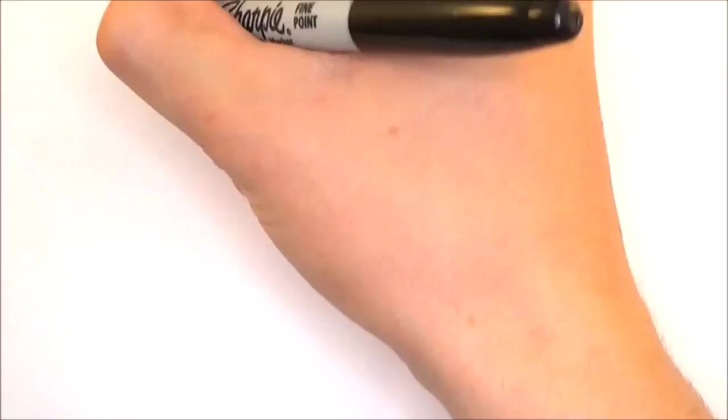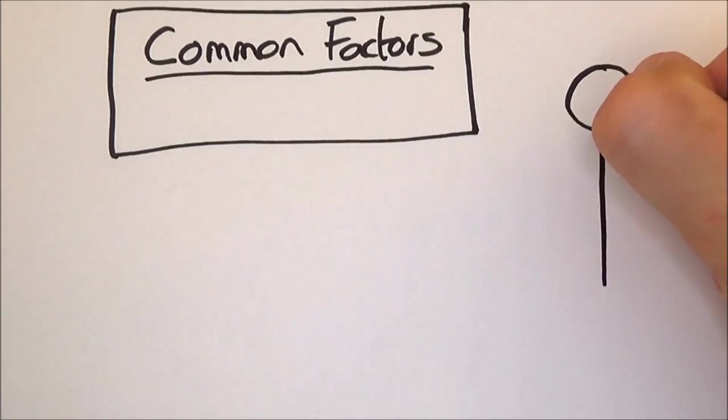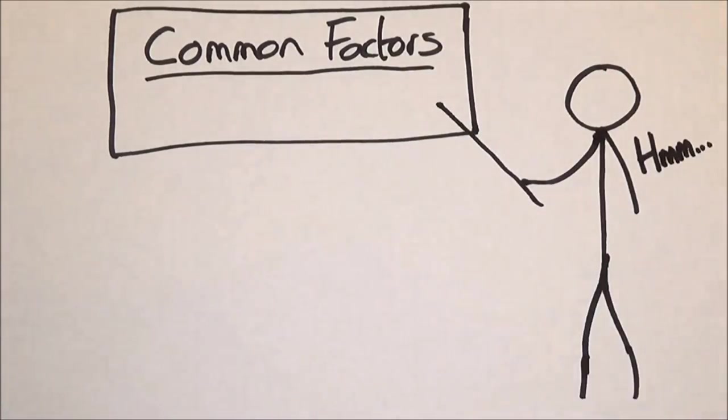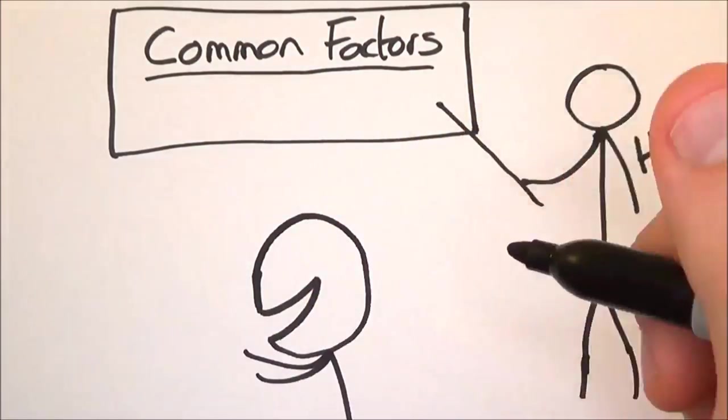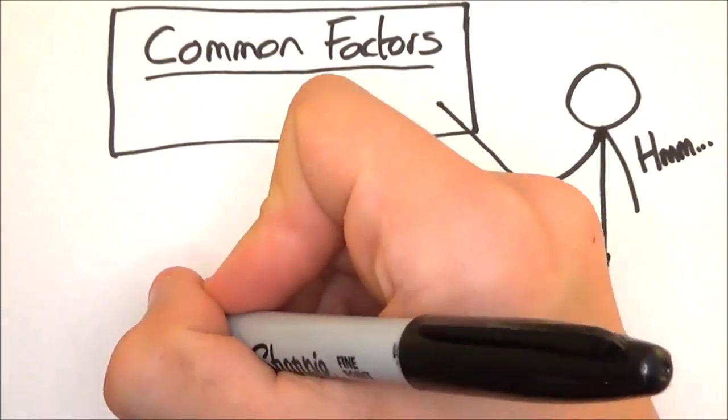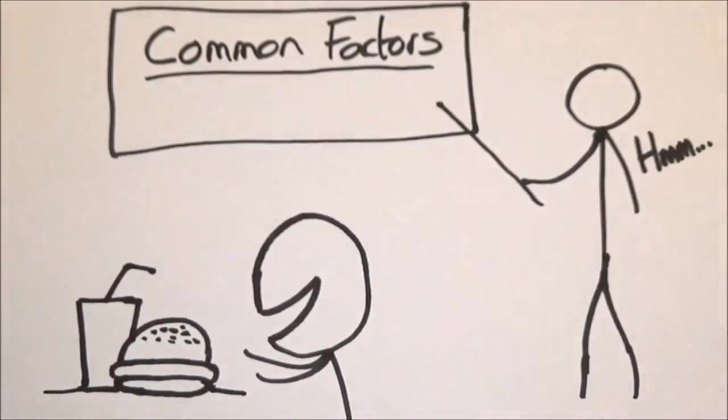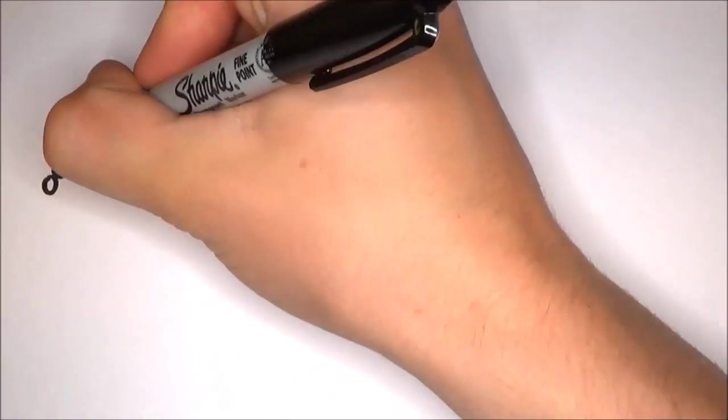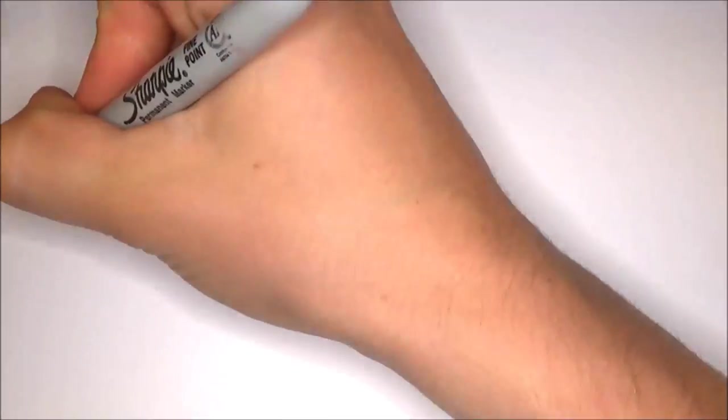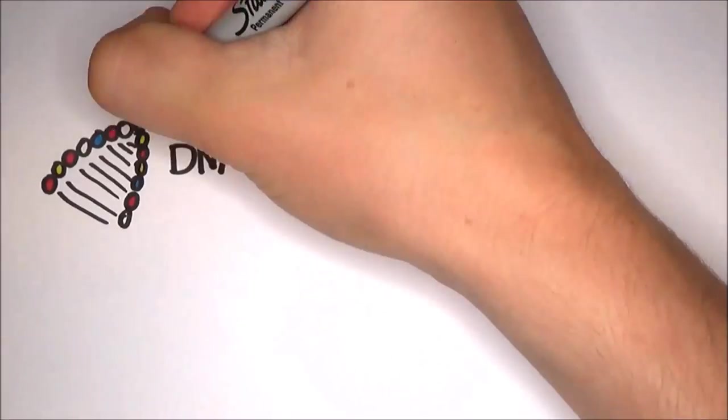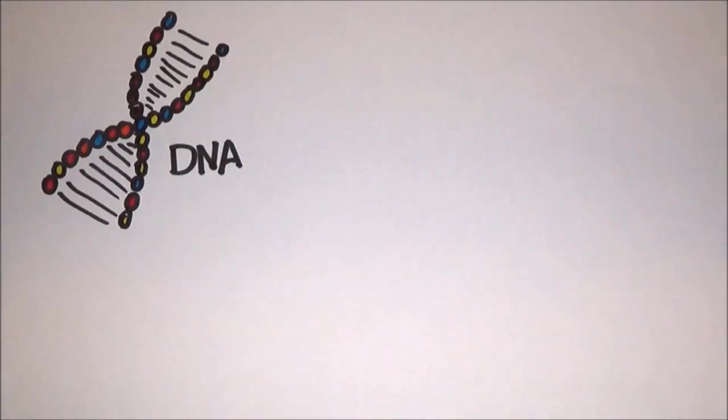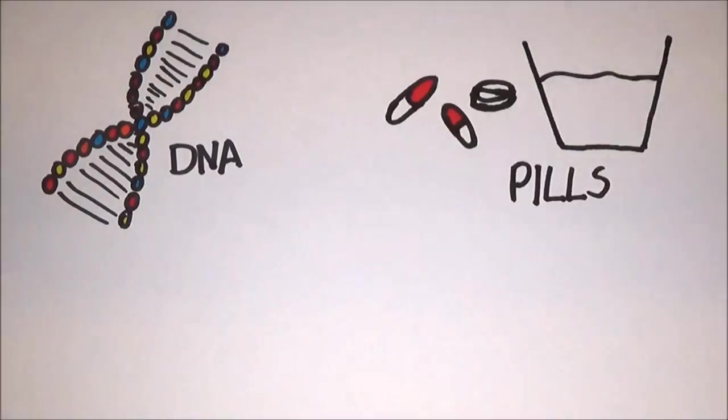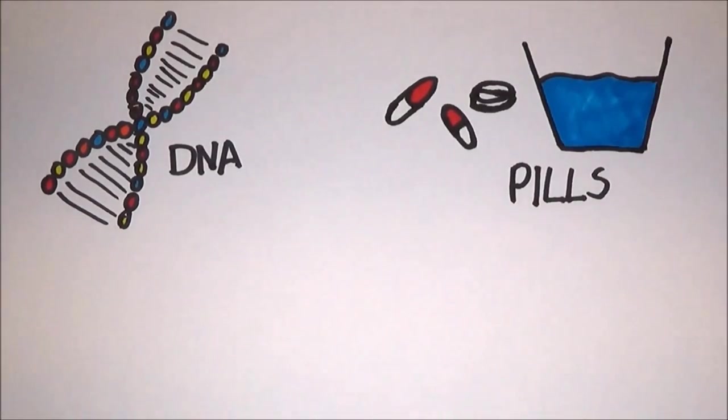While some scientists are trying to discover the common factors that cause all of us to age, others are investigating why some people survive an unusually long time, despite not living particularly healthy lifestyles. It's likely that the difference is down to their DNA. We know that people react differently to different drugs and lifestyles, but isolating the genes responsible is a mammoth task.